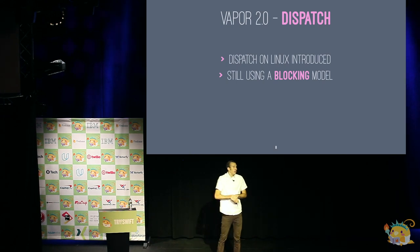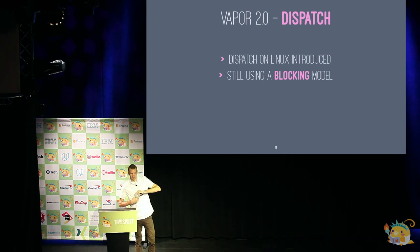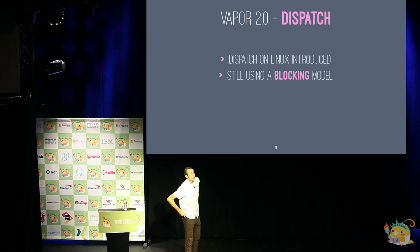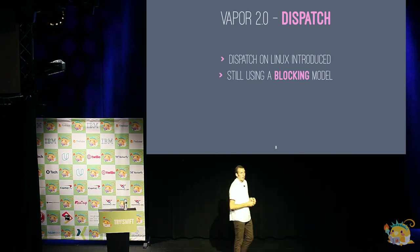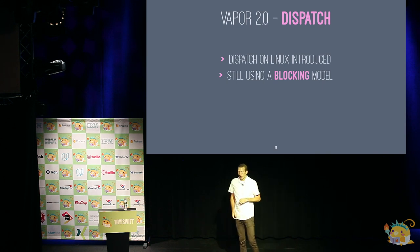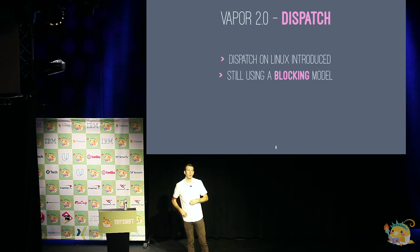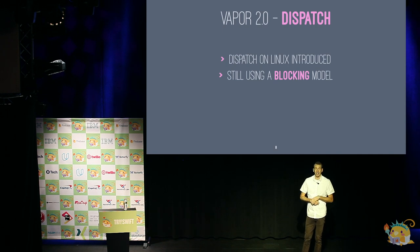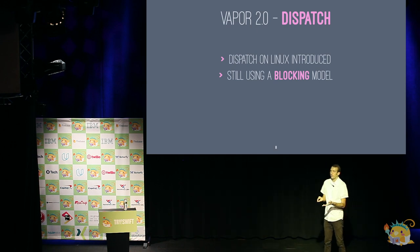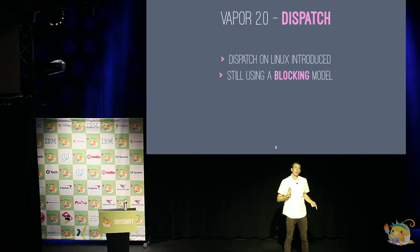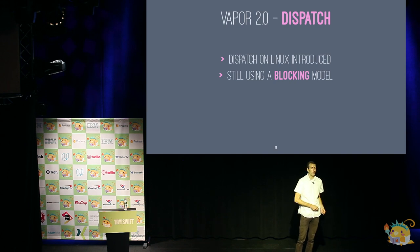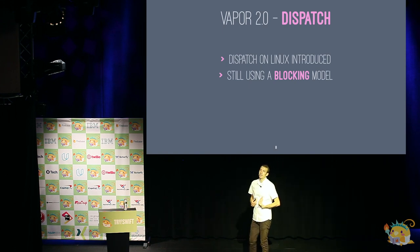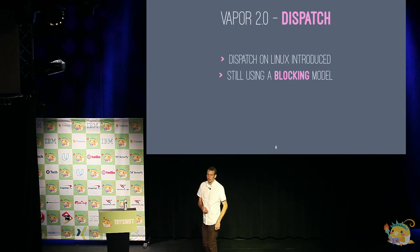Then Vapor 2.0 came out. At this point Dispatch was released, which was super helpful for us. The IBM team did a lot of great work to help get Dispatch up on the server, and the Apple team made it a priority. From the user's point of view not a lot changed on the concurrency model — we were still blocking, but using Dispatch has a lot of advantages. A library like Dispatch that's been around for years runs efficiently and gets battle-tested. When we were running our own concurrency model, only Vapor users saw it. With Dispatch we get every user out there helping to improve it, and it's one less thing we have to maintain, so we can focus on higher-level features.